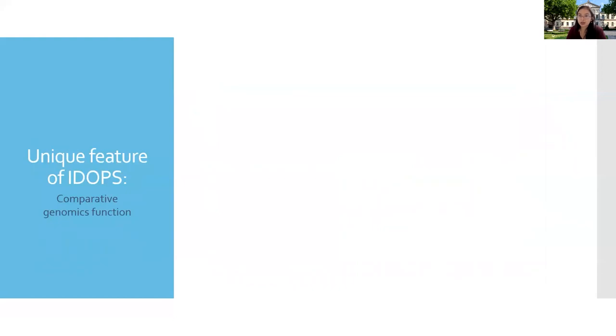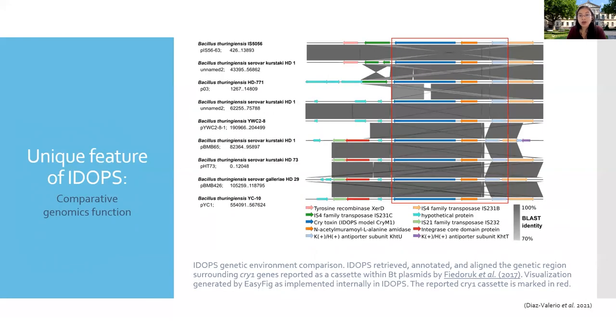Besides the high quality model collection, there is another feature that makes IDOPs unique, a function to analyze the genetic environment of a toxin. This is relevant because it allows to describe the whole expression unit, so we can identify the elements required for optimal toxin expression, such as regulators, crystallization domains, chaperones, and other accessory components like mobile elements, transporters, prophages, and virulence factors. The arrangement of these elements in different genomes can reveal crucial information about functionality, host adaptation, diversification, and evolution of the pesticidal proteins. Here is an example that we use to validate this function. We gave IDOPs these plasmids, and it was able to identify and generate a visual representation of a Cry1 cassette that was previously reported.